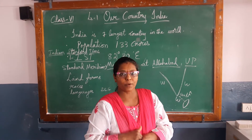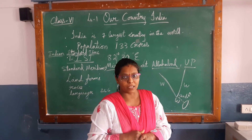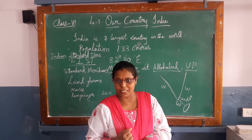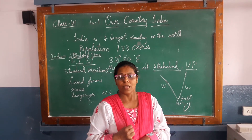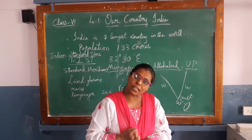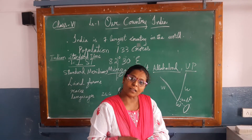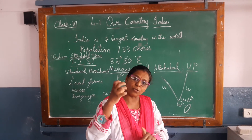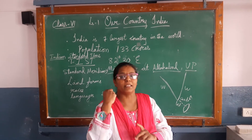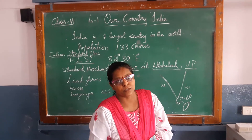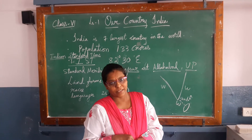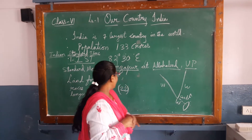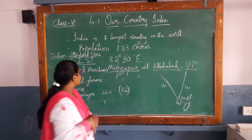These 28 states are governed by the state government, and the union territories are under the control of, or governed by, the central government.